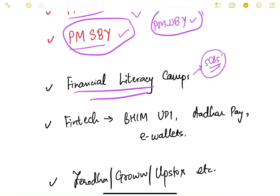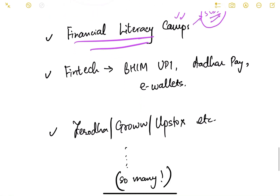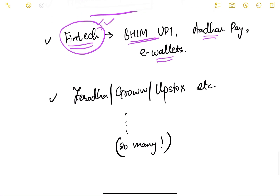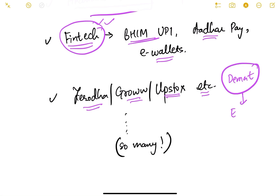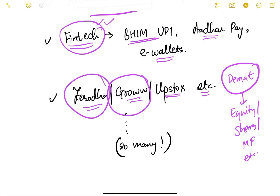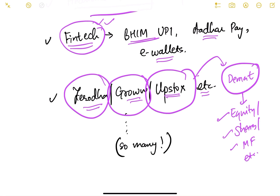Financial literacy camps have been arranged by RBI, with scheduled commercial banks asked to conduct them in rural areas. The use of modern technology in finance — known as FinTech — is another important area, including BHIM UPI, Aadhaar Pay, e-wallets, Paytm, and PhonePe. New startups like Zerodha and Groww allow easy access to demat accounts, enabling investment in equity, shares, and mutual funds.